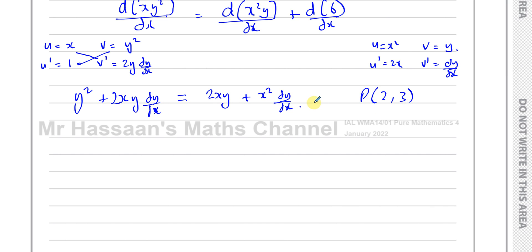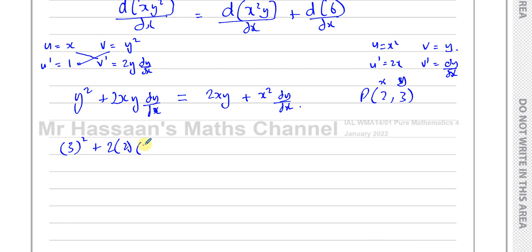Bringing the dy/dx terms to one side: 12 dy/dx minus 4 dy/dx equals 12 minus 9. So 8 dy/dx equals 3, which means dy/dx equals 3/8. We're asked to find the gradient of the tangent. The tangent has the same gradient as the curve, so the gradient of the tangent is 3/8 at the point (2, 3). I noticed a few students, when I set this paper, got the gradient right but then mistakenly used minus 8/3 as the gradient — that would be the equation of the normal at P, not the tangent.